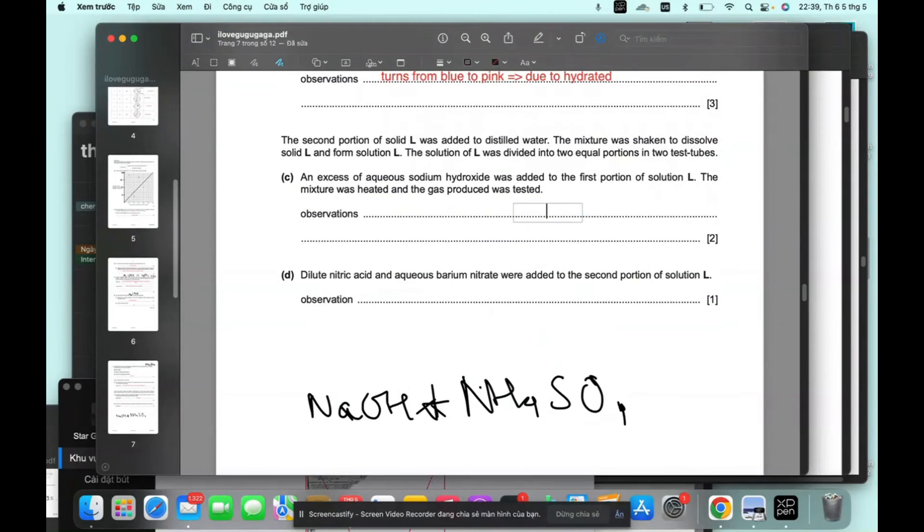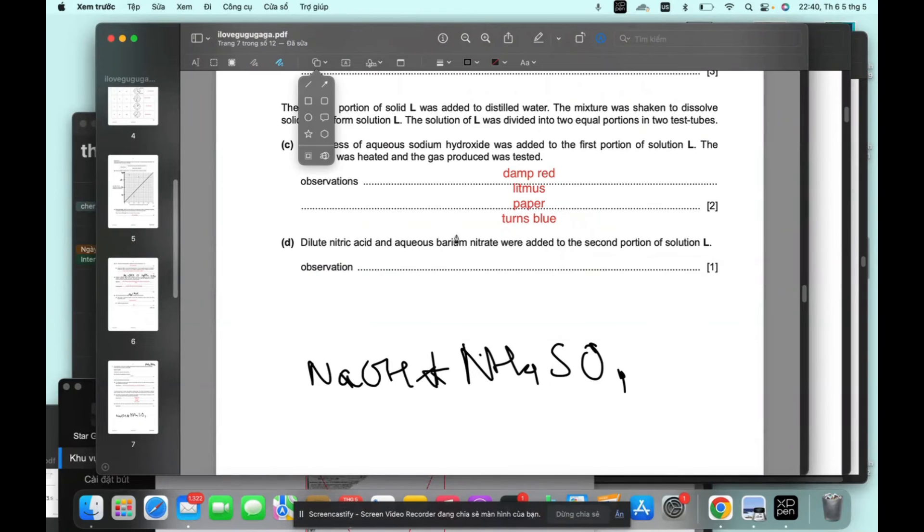So observation would be that red litmus paper turns blue. Because we, as we know, ammonia is an alkaline substance. Okay.